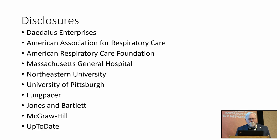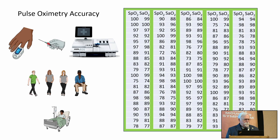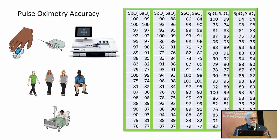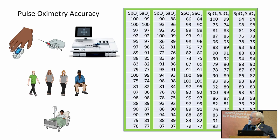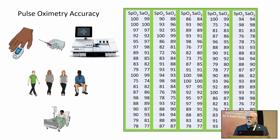Let's talk about the accuracy of pulse oximetry. Consider a study where you evaluate any pulse oximeter: the gold standard reference is an arterial oxygen saturation measured by co-oximetry in the blood gas laboratory. You gather a number of individuals - normal or hospitalized - and compare 100 pulse oximeter saturations to the saturation from a co-oximeter.